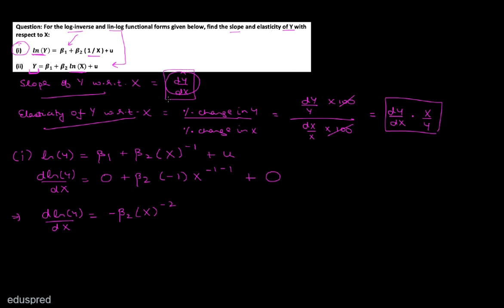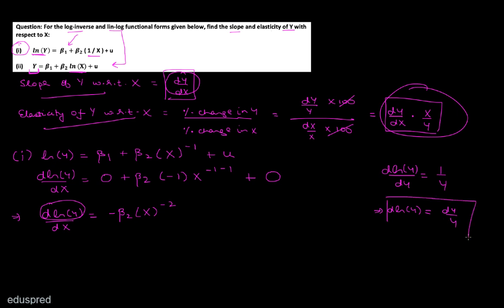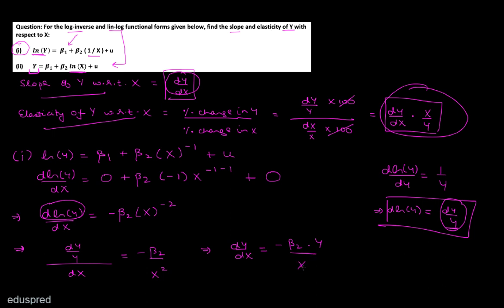We are interested in dy/dx, so we need to handle the left-hand side. The differentiation of log(y) with respect to y is 1/y, which means d(log y) = dy/y — that is, the change in log(y) is the proportional change in y. Substituting, we get (dy/y)/dx = −β₂/x², which implies dy/dx = −β₂·y/x². This is the slope of y with respect to x for this model.